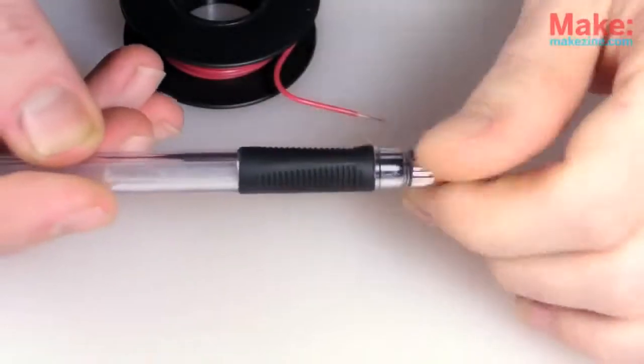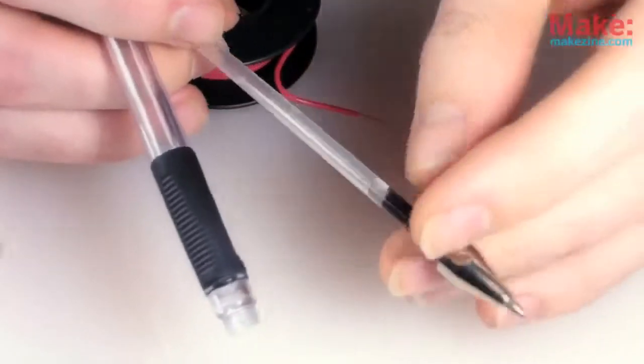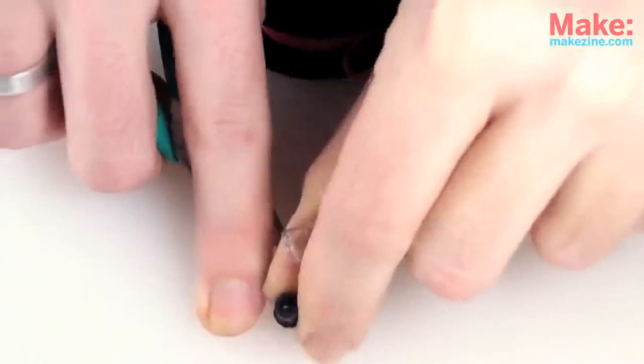I'll start by removing the pen's ink tip and tube, pop off that end cap as well.